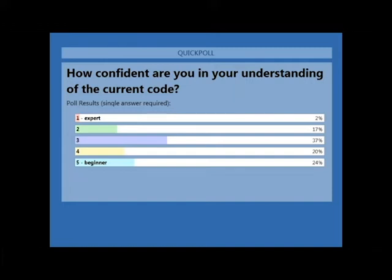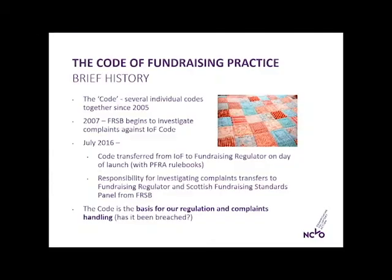The key question when a complaint comes in is: has the code been breached? So unlike the Charity Governance Code, the Fundraising Code includes rules — because we need to have absolutes that we can regulate against rather than being purely values driven.